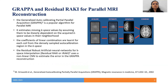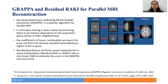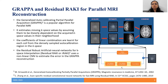The Residual Robust Artificial Neural Networks for k-space Interpolation method (RRaK) uses a non-linear CNN to estimate the error in the GRAPPA reconstruction. The missing values are thus not only a linear combination of their neighboring acquired values, but the sum of a linear and a non-linear combination of the neighboring values.